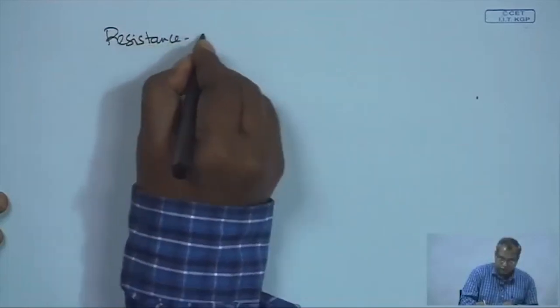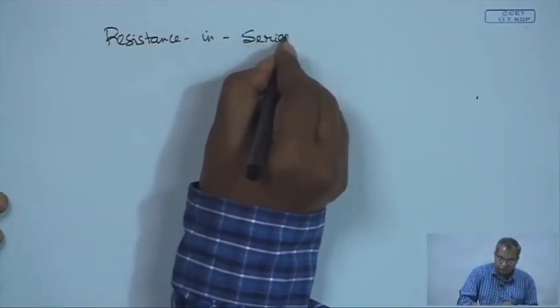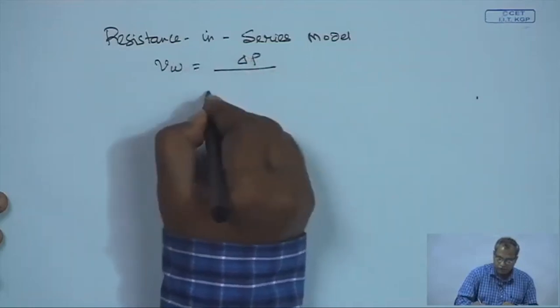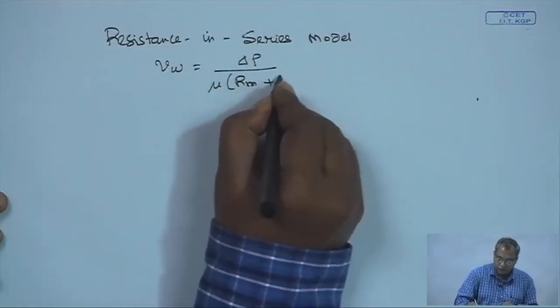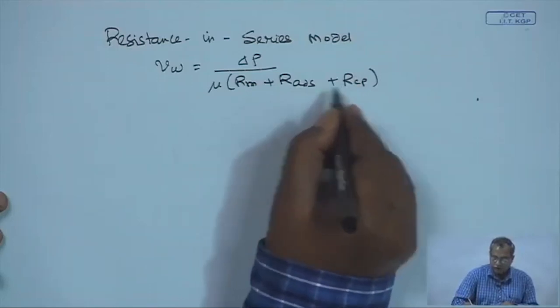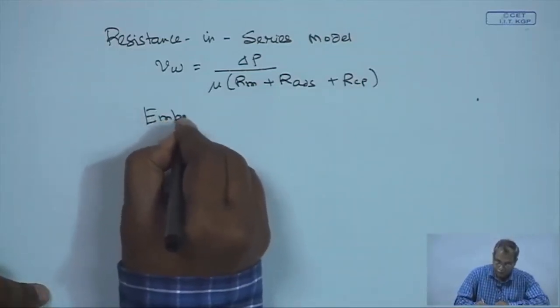That completes the modeling of gel layer controlled filtration. Next we will move to module design. We have looked into osmotic pressure controlled filtration and gel layer controlled filtration. One more model to touch on is the resistance-in-series model. In this phenomenological model, we assume permeate flux equals driving force divided by all resistances in series: membrane resistance, adsorption resistance, and concentration polarization resistance. However, this is an entirely empirical model.